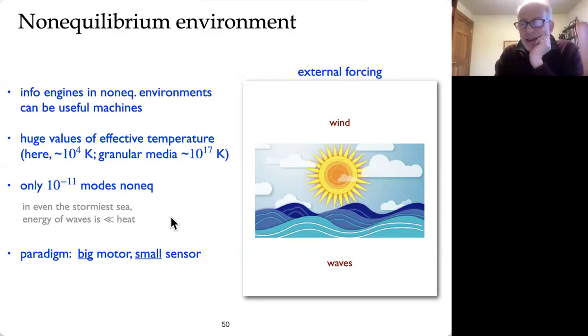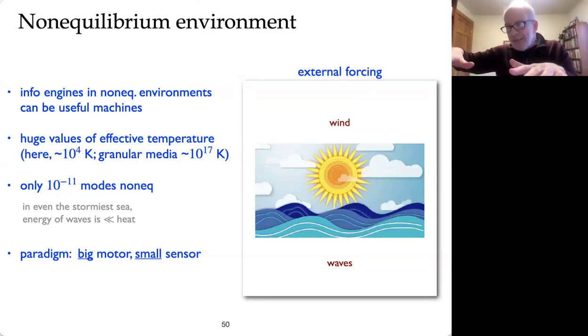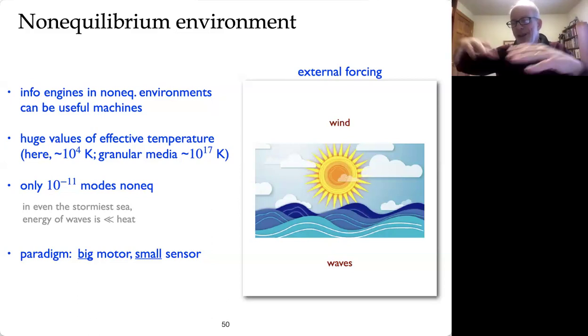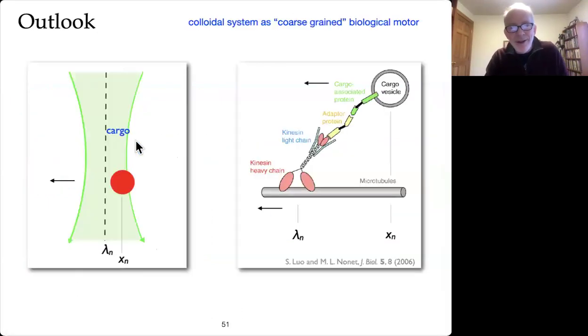So if you think about the ocean and its waves, the waves are huge compared to thermal fluctuations of the surface, but the amount of energy contained in all of those waves is tiny. If we could imagine turning off the sun and letting the ocean relax to equilibrium, its temperature would hardly change because only 10 to minus 11 modes are out of equilibrium or something like that. So as long as you have kind of a big motor that is sensitive to non-equilibrium force fluctuations, and the sensor is somehow small and remains at equilibrium, then you have this kind of situation that I'm talking about.